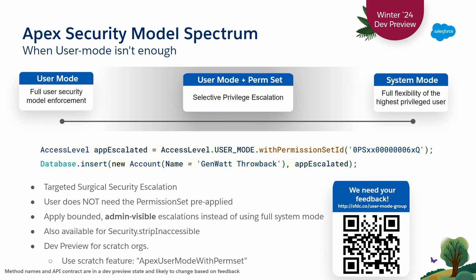We're launching a dev preview in Winter 24 for user mode plus a permission set escalation. With the code on screen - note this is placeholder syntax for the dev preview - you can define your own access level, which is the enum you pass into database operations when using user mode. Here we've said user mode plus a permission set. That applies the permission set for that specific database operation. The user does not need to have that permission set assigned, because in trusted Apex code, we assume the escalation is appropriate and approved.